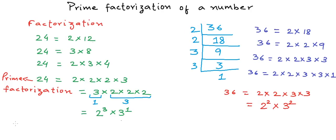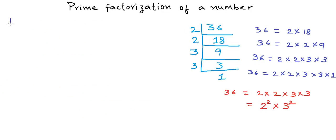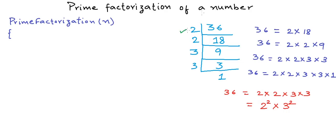Let us now write code for this. I will write a function prime_factorization that will take an integer n as input and print the prime factorization of n in exponent form. To find prime factorization in exponent form, all we need to know is what the prime factors are and what their frequencies are — how many times each occurs.